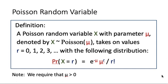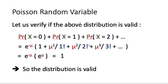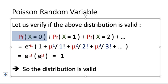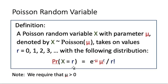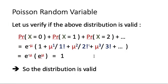Before we move on, let us first check that this is actually a valid distribution. We want to show that the probabilities for x equal to 0, 1, 2, and so on, add up to 1. By definition, the probability of x equal to 0 will be e to the power minus mu times mu to the power 0, which is 1, divided by 0 factorial, which is also 1. So the probability of x equal to 0 is e to the power minus mu.